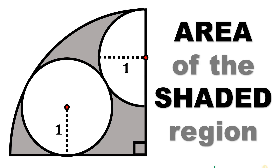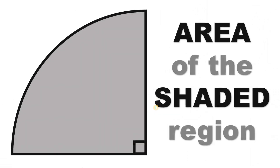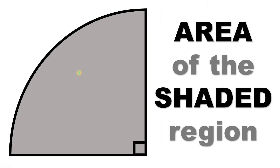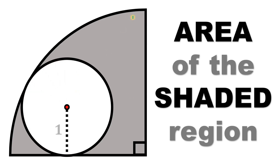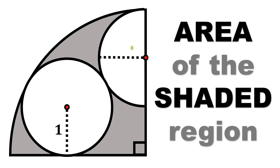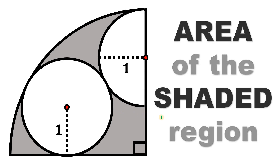Can you solve this geometry challenge? Here's the question. Let's start with this quarter circle, and now let's draw a circle inside of it with a radius of one unit, and now let's draw a semicircle with the radius of one unit also. The question is: what is the area of the shaded region?